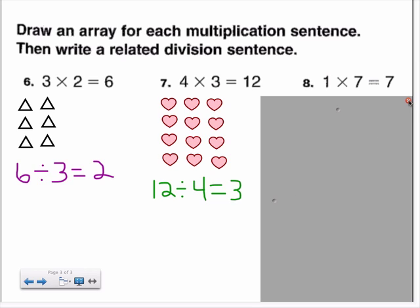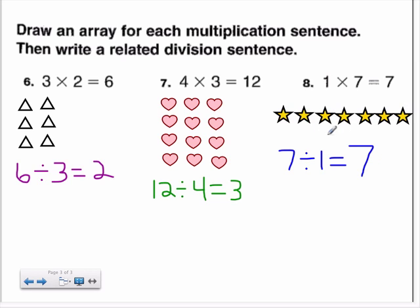One last example: one times seven. The first factor, one, represents the number of rows I will have — I will have one row. The second factor, seven, represents the number of objects that will be in that one row. I chose to use stars here. Notice that I have one row with seven stars in the row. This same idea can be represented with the division sentence: seven divided by one equals seven, because I have seven stars in all, divided into one row, which equals seven stars in one row.